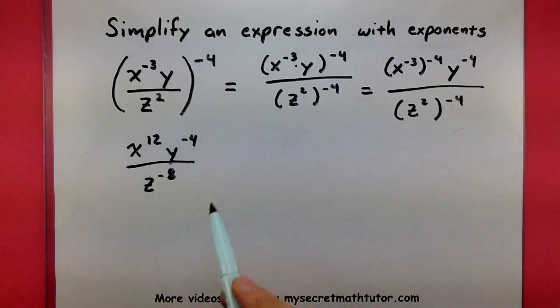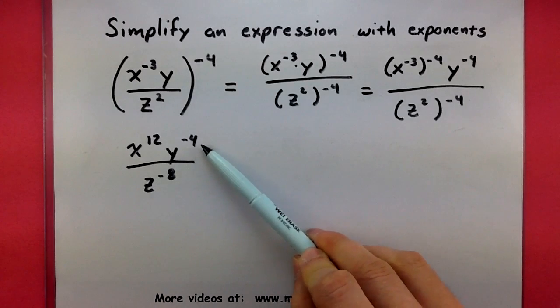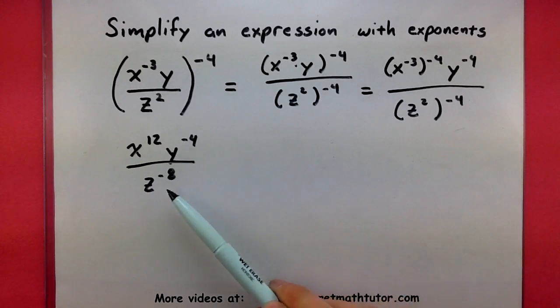Alright, so our expression is starting to look really good. And you might be tempted to stop, but please don't. Because we actually have a negative in the top exponent and a negative in the bottom exponent. And when we want to simplify expressions, we often want to write them using only positive exponents.